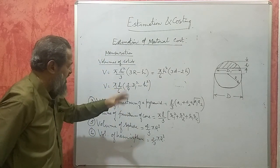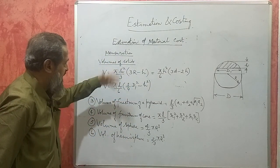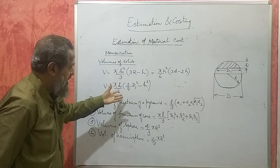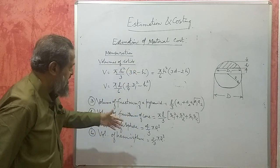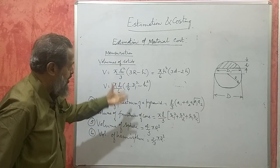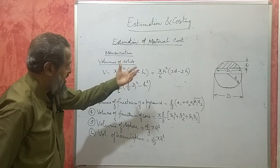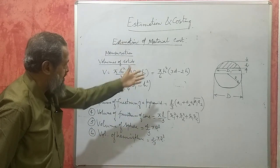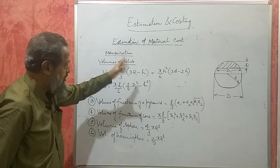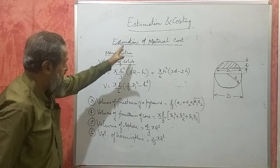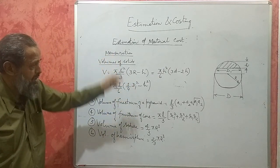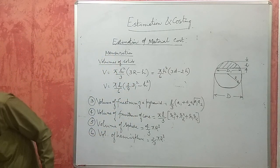So, these are the commonly occurring shapes, solids, and area formulas we have discussed. Now, you have to use these formulae, calculate the volume, then convert it into weight, and then weight into rate will give you the material cost. You will definitely get one full question from this chapter. This unit carries about 15 to 20 marks.